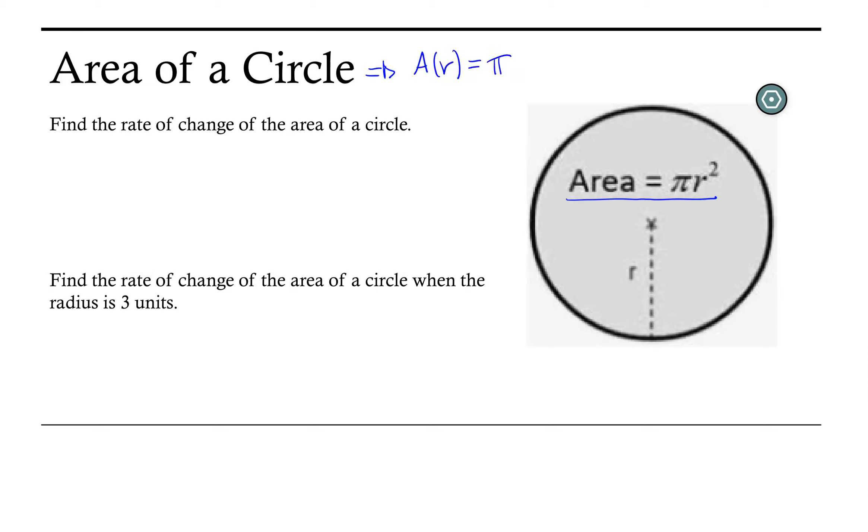the area of a circle is dependent on the radius of the circle. So as a function, area as a function of radius is equal to π r².